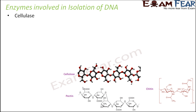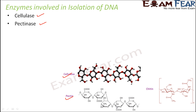The enzymes involved in isolation of DNA are: cellulase, which breaks down cellulose — an important component of the plant cell wall. Pectinase helps to break down pectin, which is again an important component of the cell wall. Chitinase helps to break down chitin, which is an important constituent of the fungal cell wall. So cellulose, pectin, and chitin are all components of the cell wall.